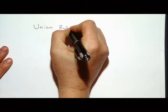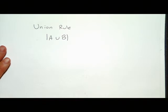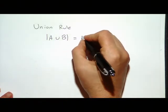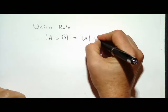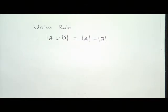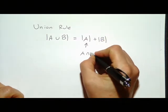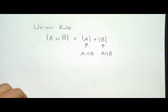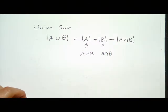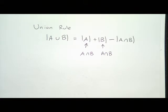Next we talk about OR conditions, which use the union rule. If I have a union of two sets and want to figure out how big the resulting set is, we take the first set and add the number of items in the second set. But there's a problem: inside the union, the items in A intersect B got counted exactly two times. So I have to subtract off the intersection once. This is the union rule: the size of A union B equals size of A plus size of B minus size of A intersect B.